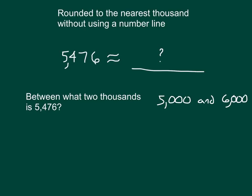Next, we think about what is halfway in between 5,000 and 6,000. Halfway in between is 5,500. Is 5,476 less than or more than halfway between the two numbers? It's closer to 5,000 — it's less than that midway point. So, 5,476, when we round it to the nearest thousand, is 5,000.